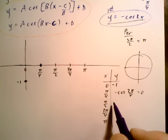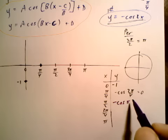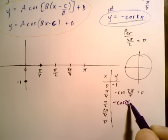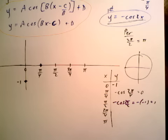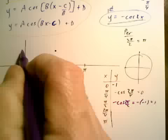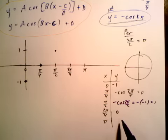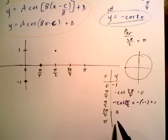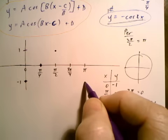So at π over 2, when we plug that in, we get negative cosine of π, right? 2π over 2. And cosine of π is negative 1, so we get a negative negative 1, which is just 1. And so we get π over 2, comma 1. There's our 1. And then 3π over 4, when we replace x with 3π over 4, you can check this, you're going to get 0. And then when you replace x with π, you get negative cosine 2π, and you get negative 1 again. So we're back down to negative 1.